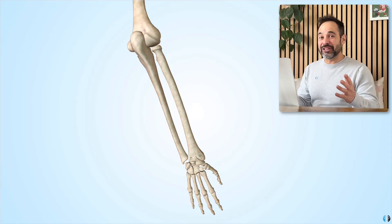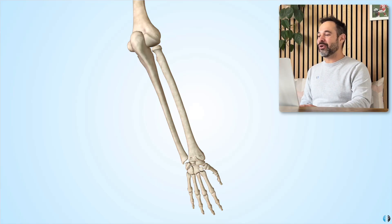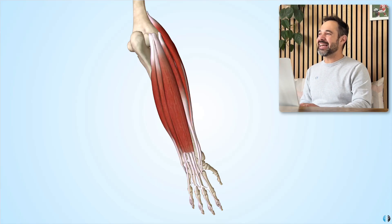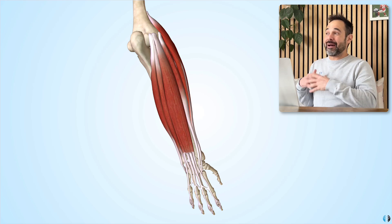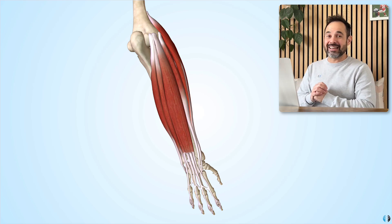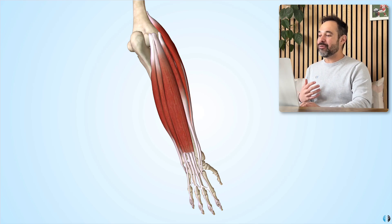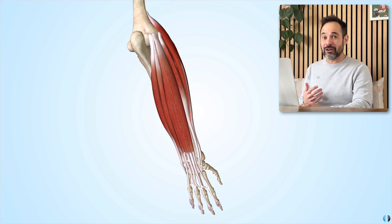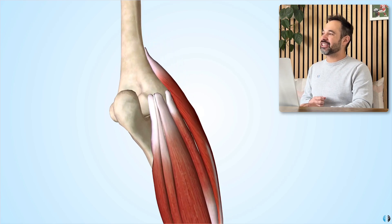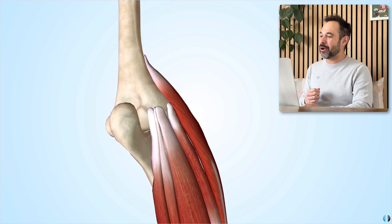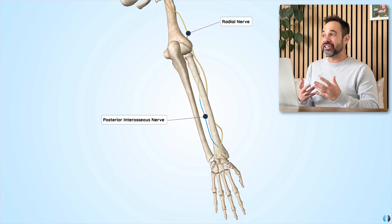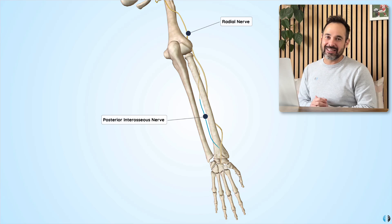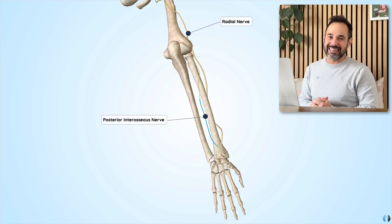In today's video, we're going to talk all about the key anatomy of the wrist extensors. We're going to talk about how they present anatomically, and we're going to talk about different clinical features, such as tennis elbow, lateral epicondylitis, and different nerve conditions that impact on these muscles as well. So if you're ready to learn, let's dive in.